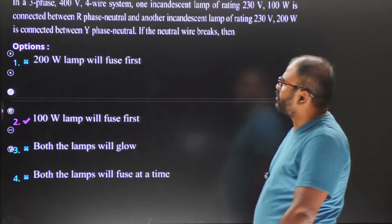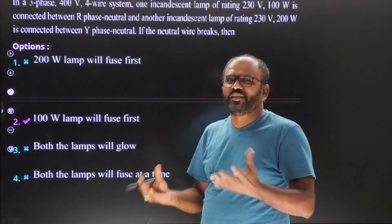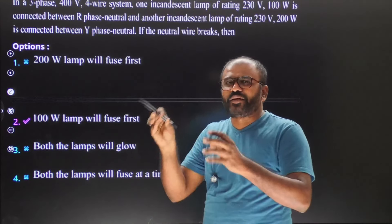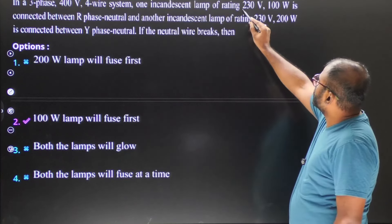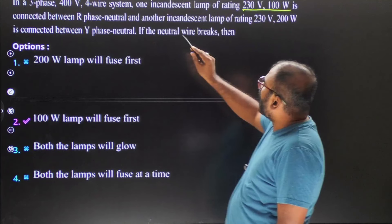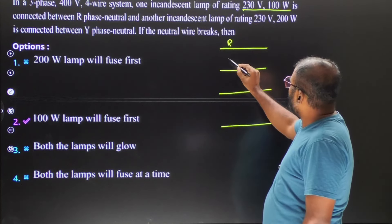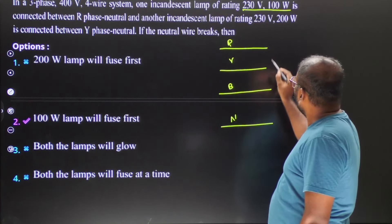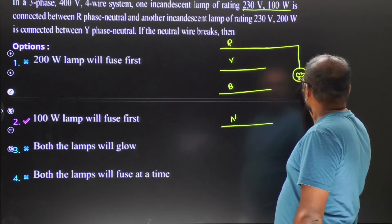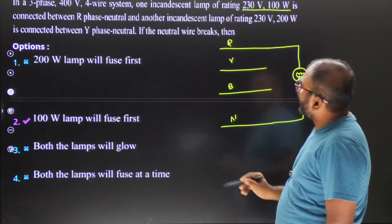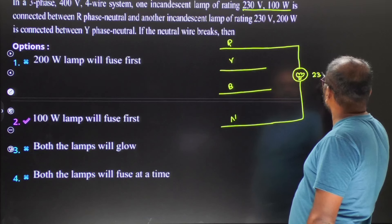The second question is also from three-phase system applications — somewhat analysis-based. In a three-phase 400 volts four-wire system, one incandescent lamp rated 230 volts 100 watts is connected between R phase and neutral, and another lamp rated 230 volts 200 watts is connected between Y phase and neutral.